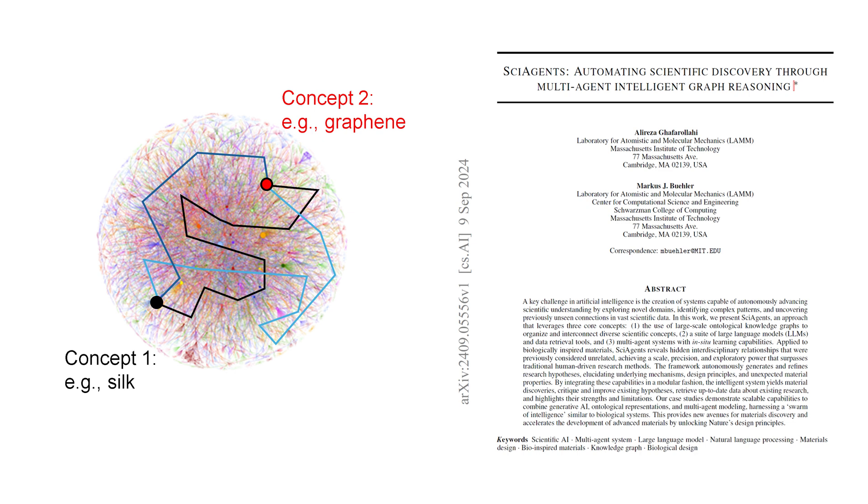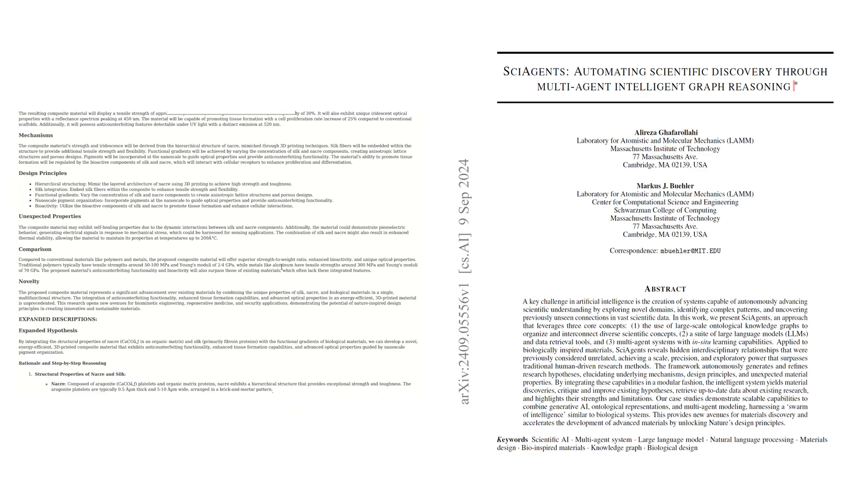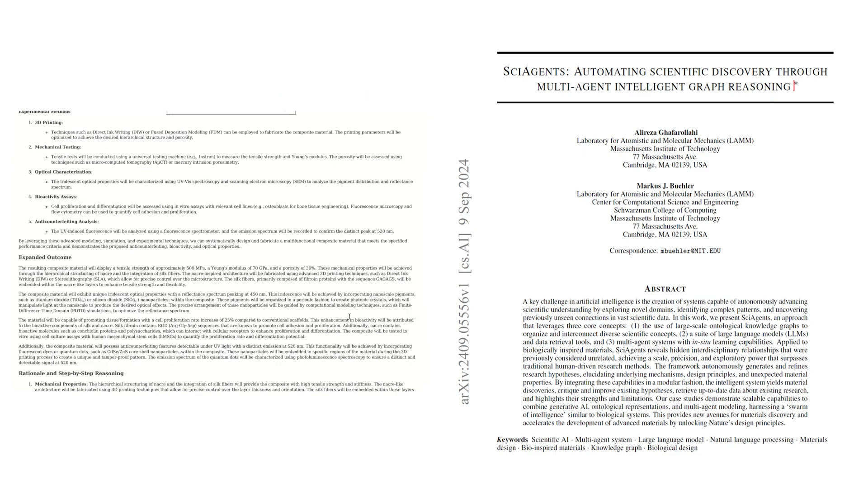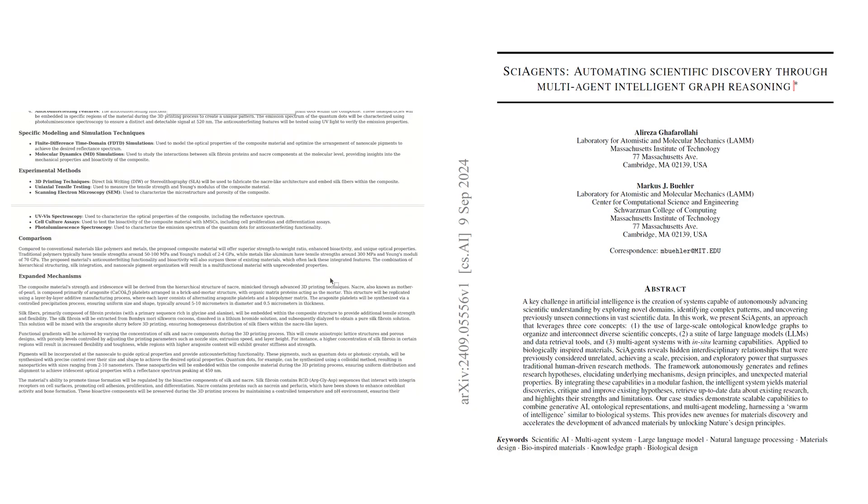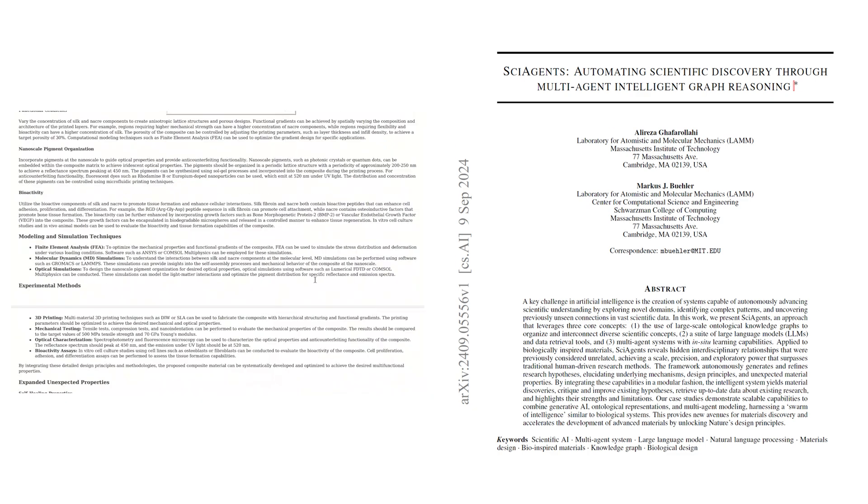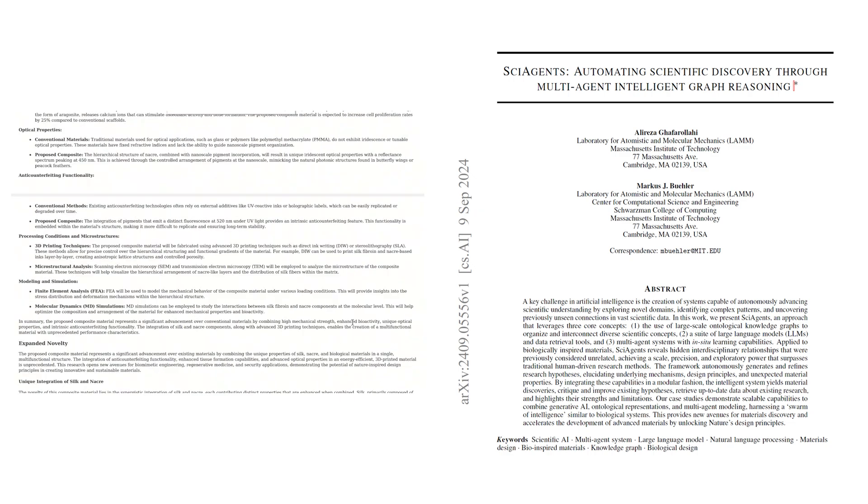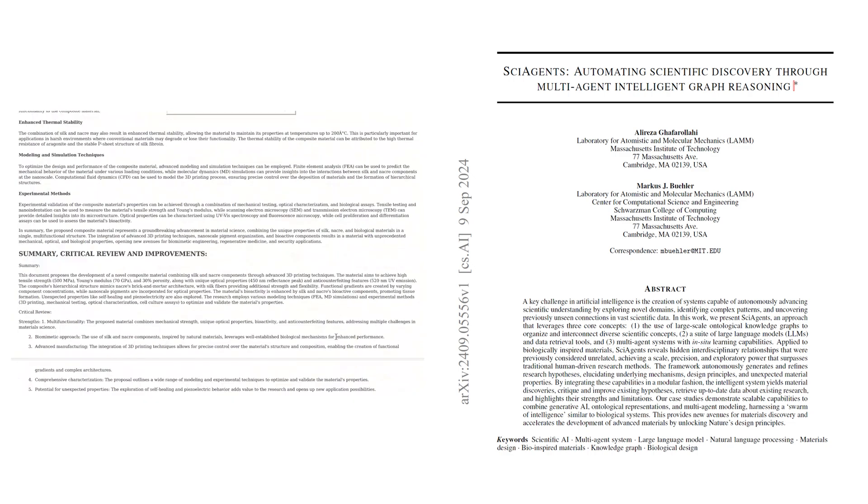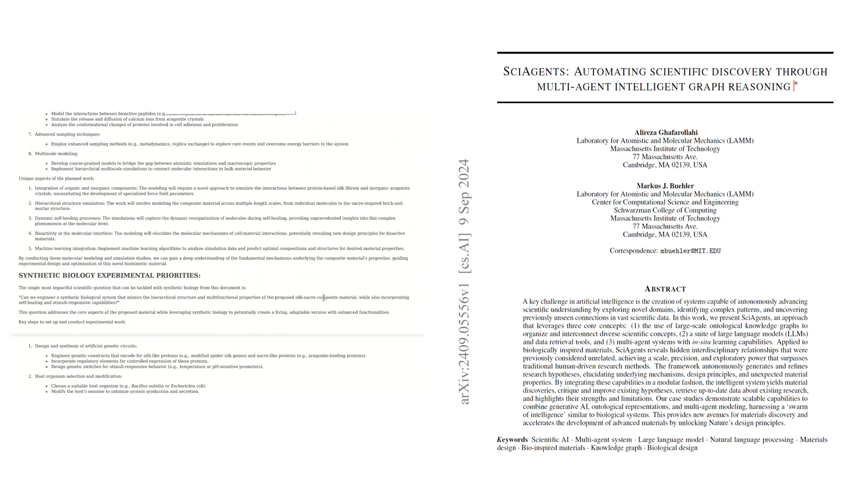Interesting. And what about large language models, or LLMs? LLMs are AI models that have been trained on vast amounts of text data. They can understand and generate human-like language, which makes them incredibly useful for tasks like summarizing information, translating languages, and even generating new content. So SciAgents uses these LLMs to process and understand scientific literature. Yes, but it goes a step further. By combining LLMs with the knowledge graphs and a multi-agent system, which is essentially a team of AI agents each with specialized roles, SciAgents can autonomously generate and refine research hypotheses.